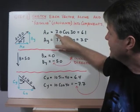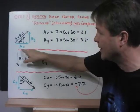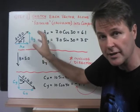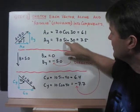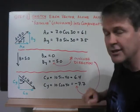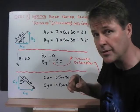So AX is 7 cosine 30. The reason I pick cosine is that I recognize that AX is adjacent to the angle. Drawing the picture or the sketch helps us figure that out. AY is 7 sine 30. That's equal to 3.5. Please check this on your calculator to see if you're going to get the same answers that I get. That's very important.